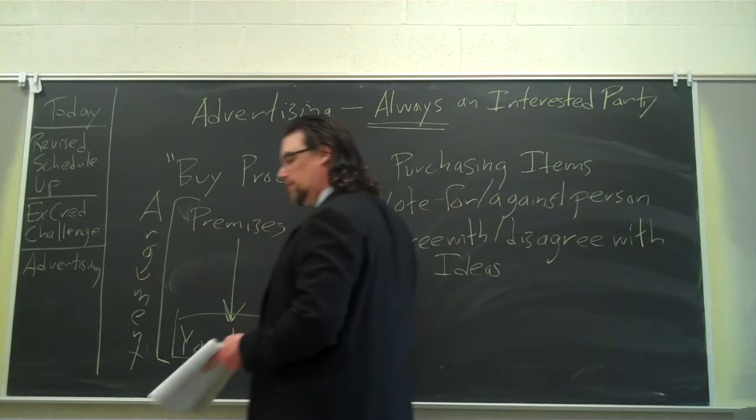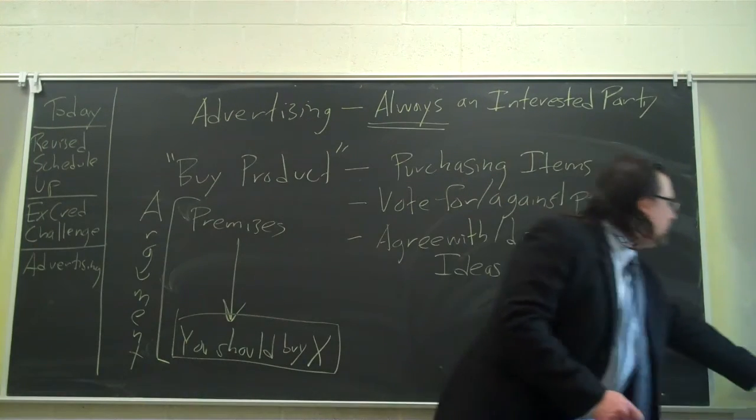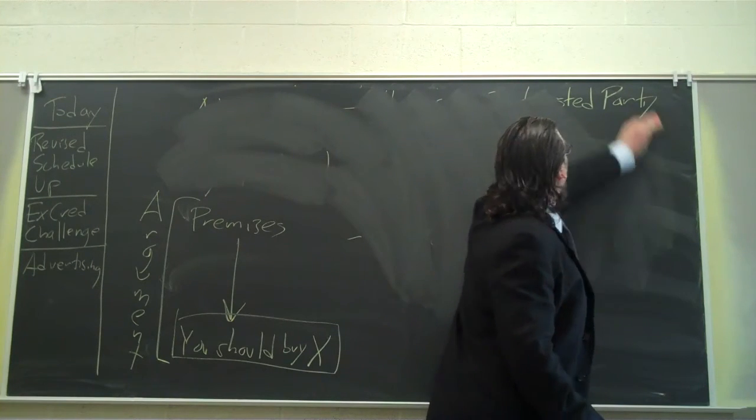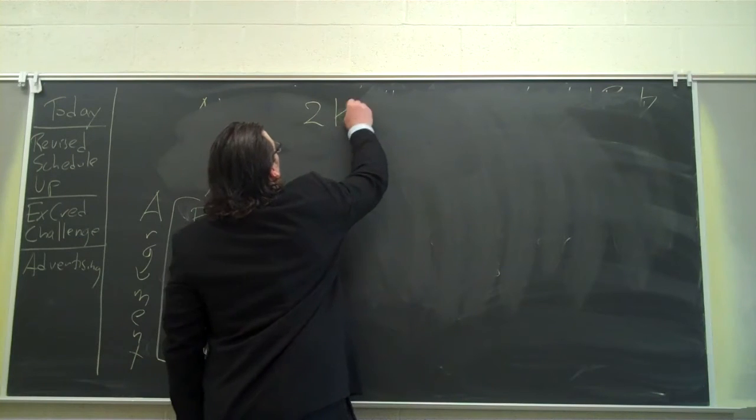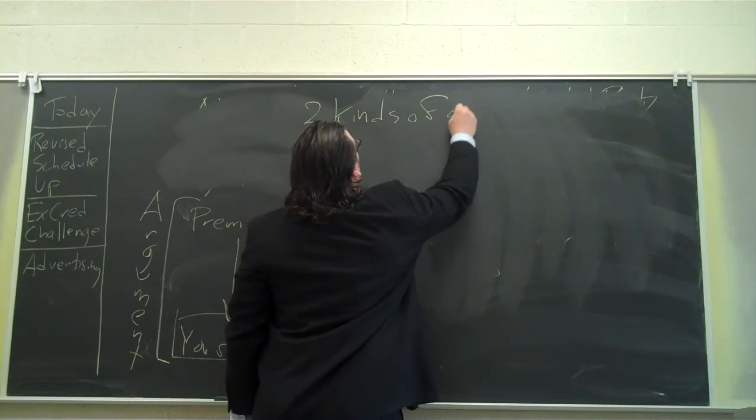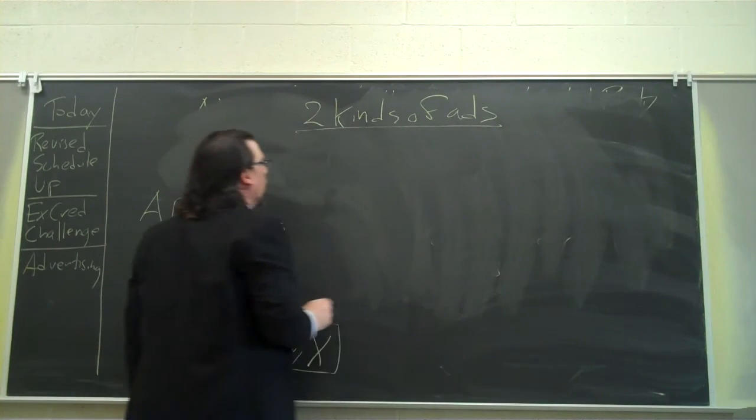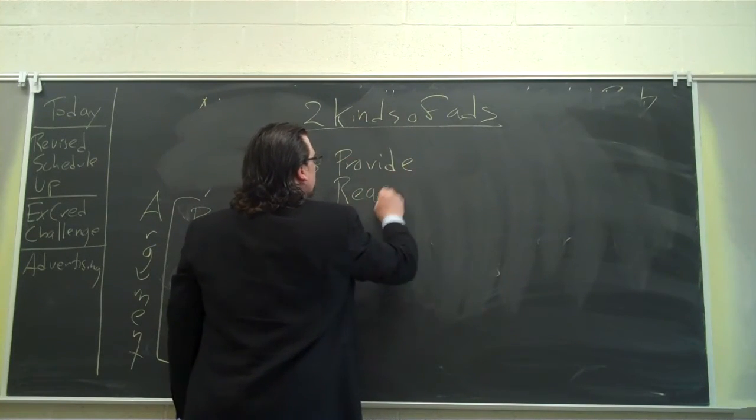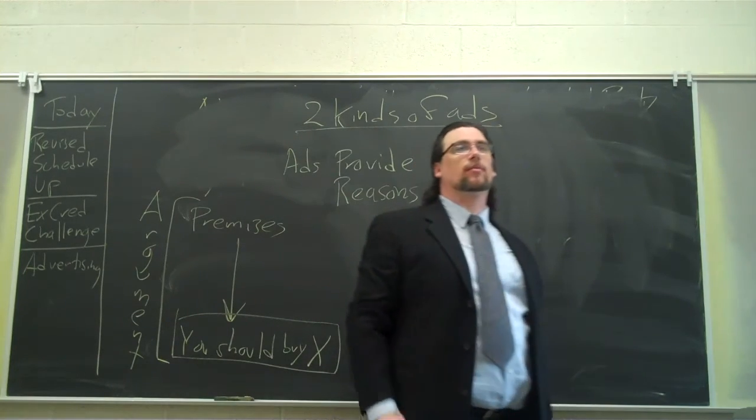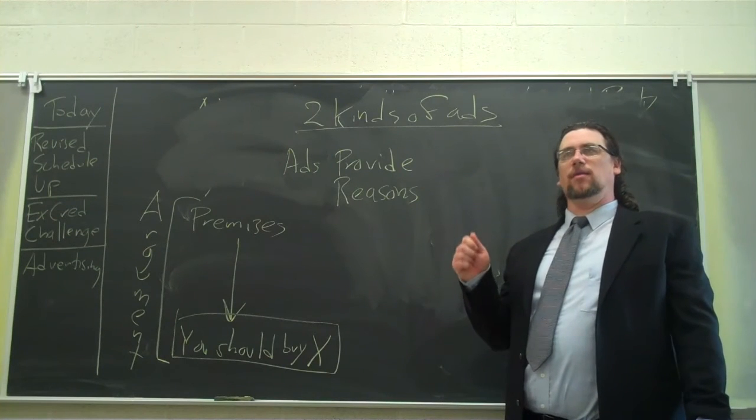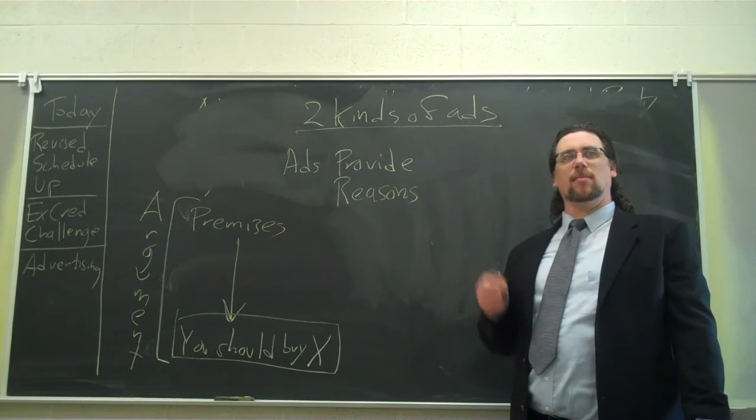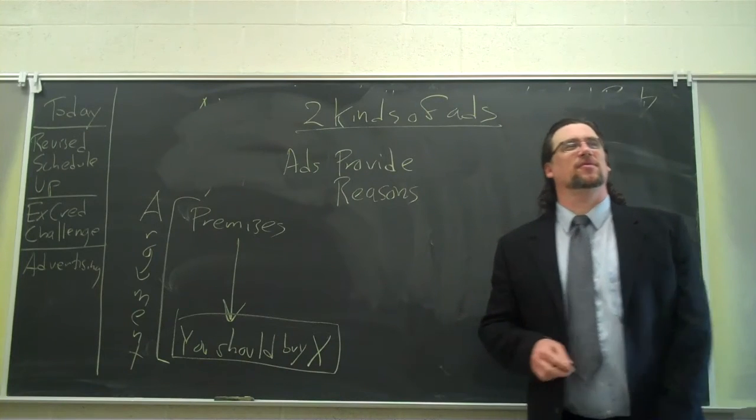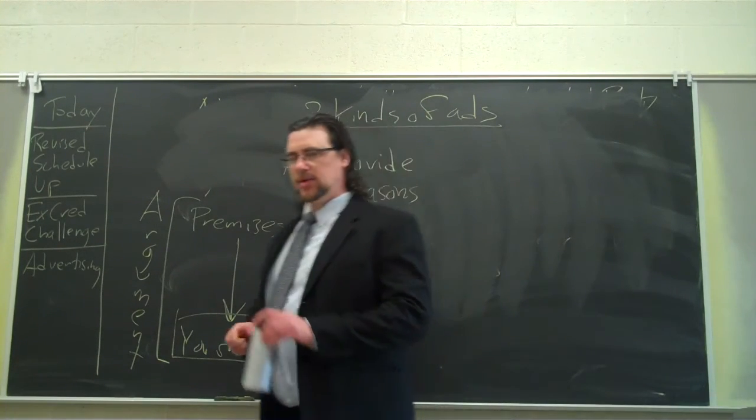Let's look at how the book divides these up. The book says there's basically two kinds of ads. Two main kinds of ads. One is ads that provide reasons for you to buy the product. Vote for John McCain because he is going to do this, this, or this. Vote for Barack Obama because he's going to do this, this, or this. Vote against John McCain because he's going to do this. Vote against Barack Obama because he's going to do this.